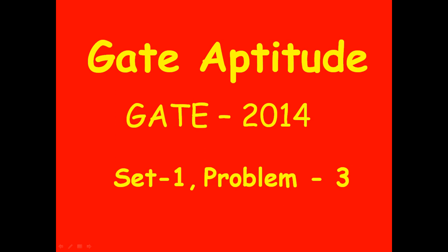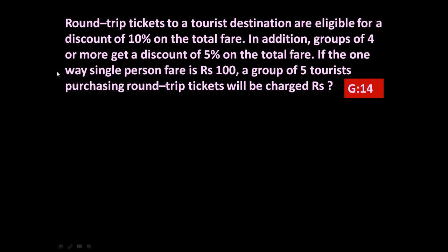Hello friends, welcome to Gate Aptitude. In this session we are going to learn a technique for solving a problem which was asked in the GATE 2014 exam. The given problem is: round trip tickets to a tourist destination are eligible for a discount of 10 percent on the total fare. In addition, groups of four or more get a discount of 5 percent on the total fare.